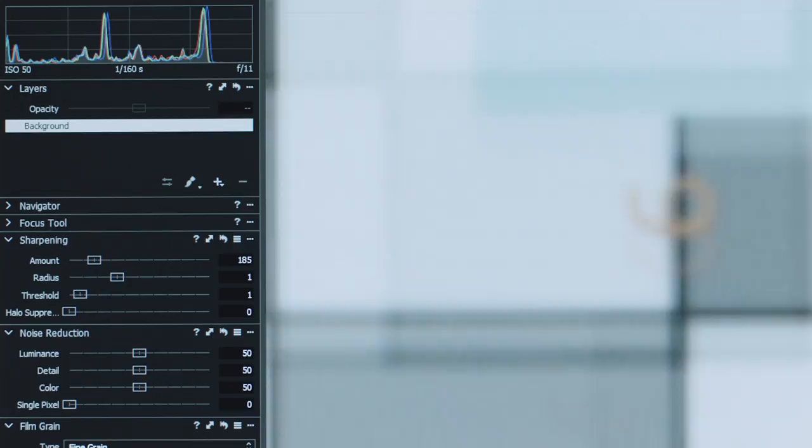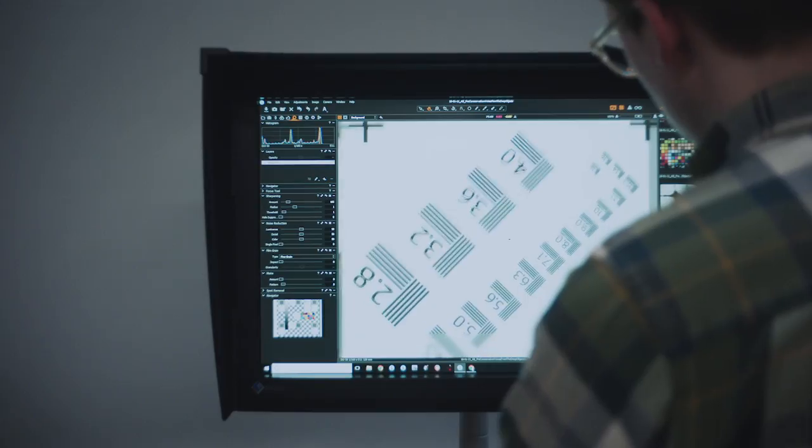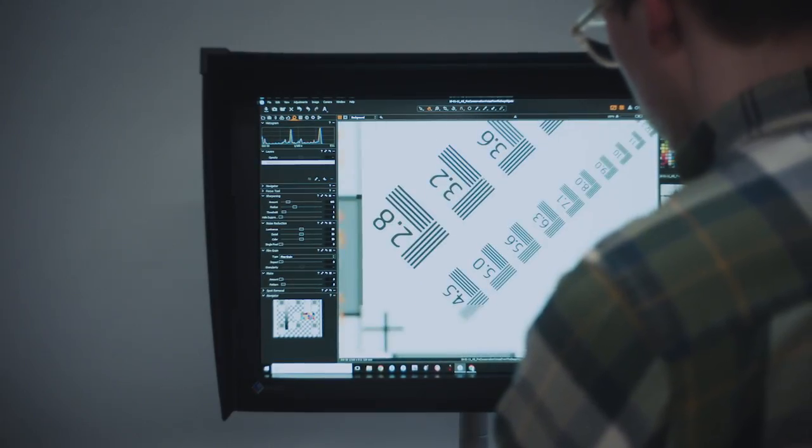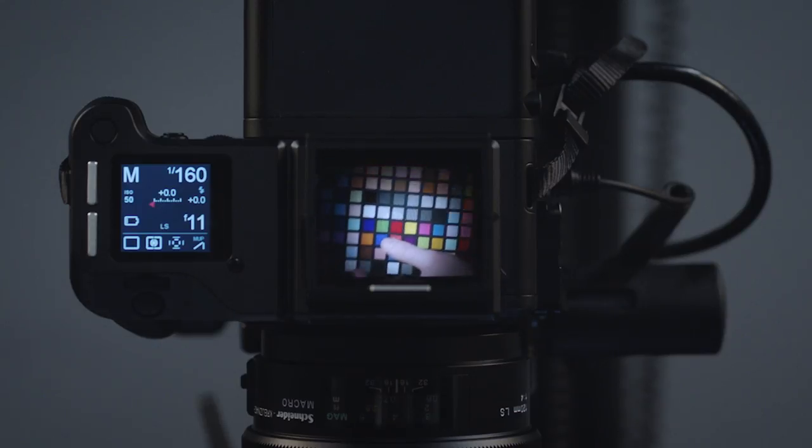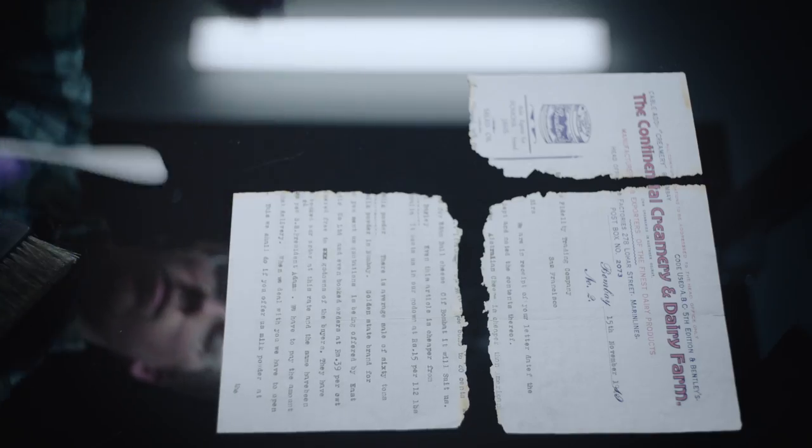We have two Phase One XF camera bodies. The IQ3100 with its CMOS sensor gives us incredible live view. For me, this made a huge difference—being able to see exactly what the camera is seeing on screen. The integration between the Phase One cameras and Capture One software means I can literally control everything.